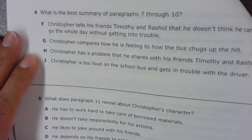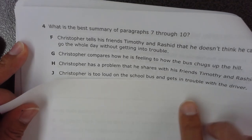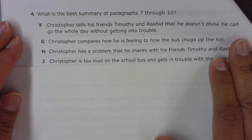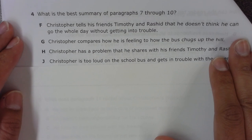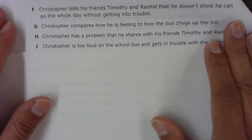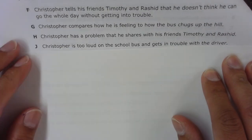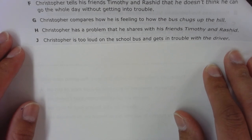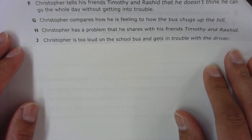Number 4. What is the best summary of paragraphs 7 through 10? F. Christopher tells his friends Timothy and Rashid that he does not think he can go the whole day without getting into trouble. G. Christopher compares how he is feeling to how the bus chugs up the hill. H. Christopher has a problem that he shares with his friends Timothy and Rashid. J. Christopher is too loud on the school bus and gets in trouble with the driver.